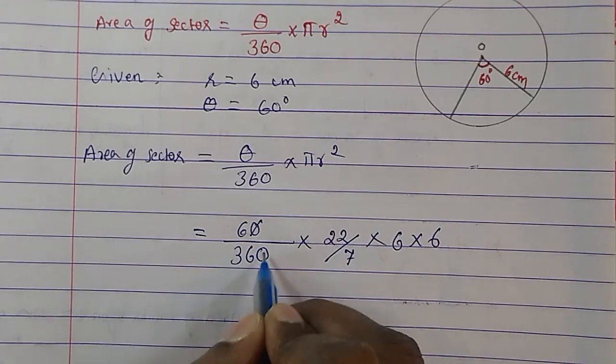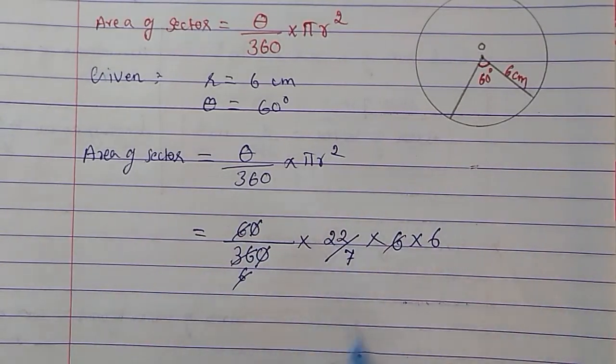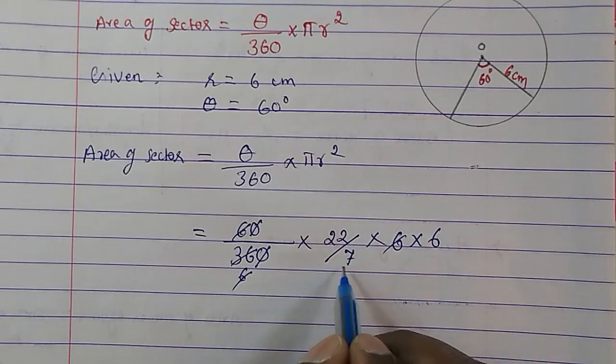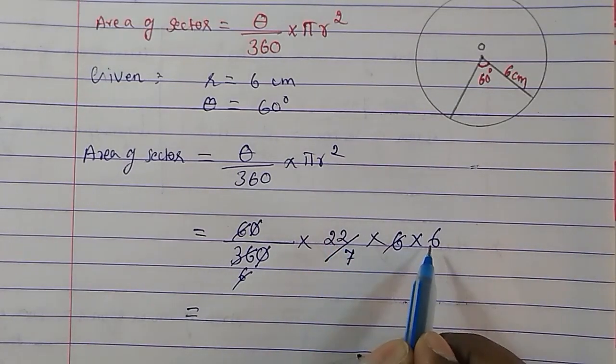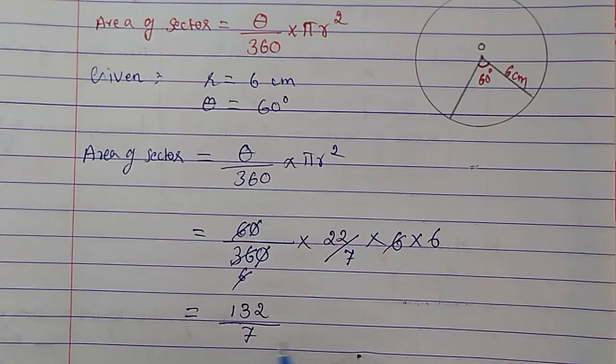Let's cancel this 60 by 360, giving us 1 by 6. This 6 gets cancelled with 6 times 6. We are left with 22, 6 and 7. Multiply 22 into 6, we get 132, and this 7 is here.